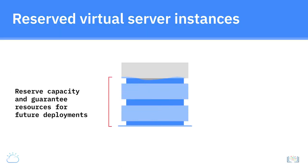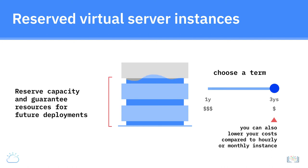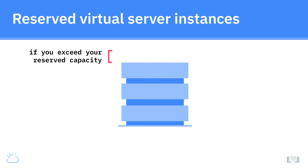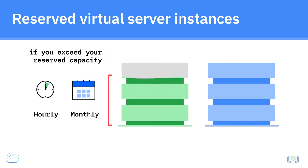Reserved virtual server instances allow you to reserve capacity and guarantee resources for future deployments. You reserve a desired amount of virtual server capacity, provision instances from that capacity when you need them, and choose a term, such as one year or three years, for your reserved capacity. You are guaranteed this capacity within the data center of your choice for the life of the contract term. By committing to a longer term, you can also lower your costs compared to hourly or monthly instances. This can be useful when you know you require at least a certain level of cloud capacity for a specific duration. If you exceed your reserved capacity, you can always supplement your unplanned usage with hourly or monthly VMs.